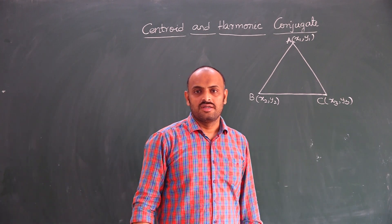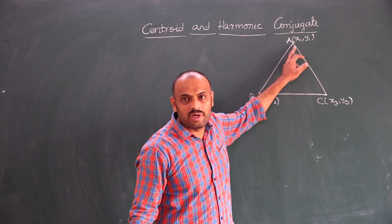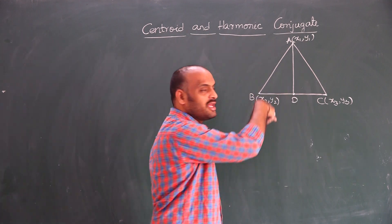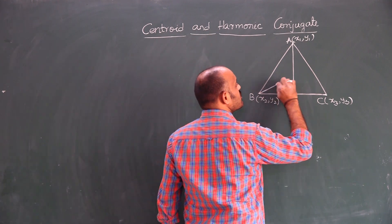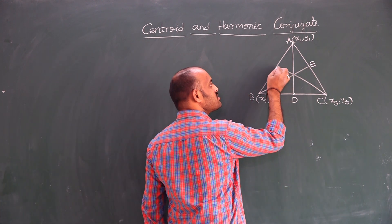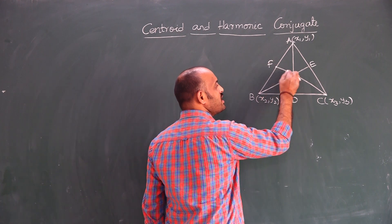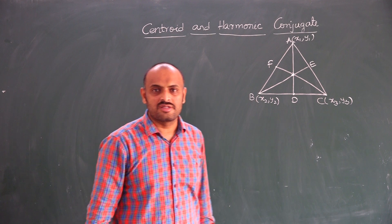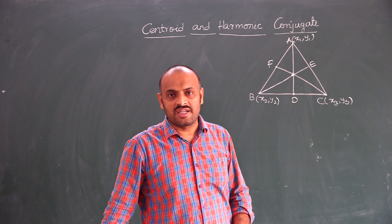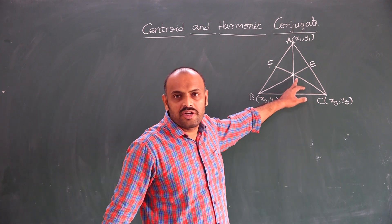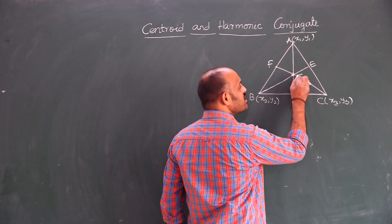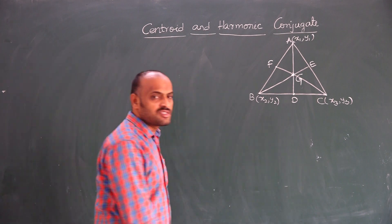What is a median? A line segment joining the vertex to the midpoint of the opposite side. AD is the median, BE is another median, CF is another median. These three medians — these three line segments — will meet at a point. If more than two lines intersect at a point, that point is called the point of concurrence, and these lines are called concurrent lines. This point of concurrence is denoted by Z, which is nothing but the centroid.